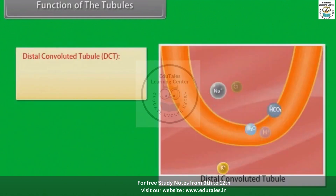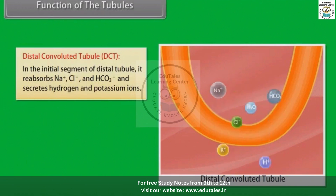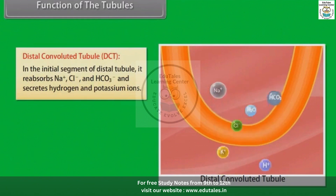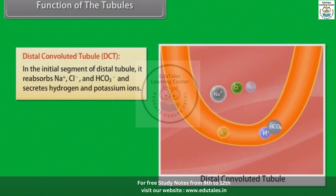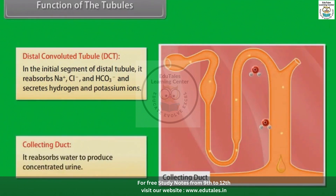Distal Convoluted Tubule. In the initial segment of the distal tubule, it reabsorbs Na+, Cl− and HCO3− and secretes hydrogen and potassium ions. In the collecting duct, it reabsorbs water to produce concentrated urine.